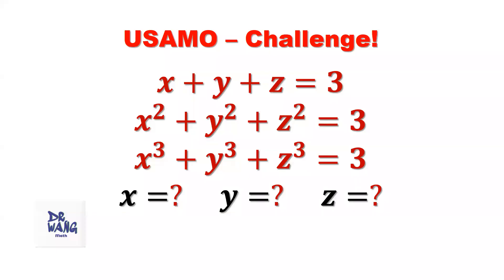Hello, everyone. I am Dr. Wen. Here is the question. If x plus y plus z equals 3, x squared plus y squared plus z squared equals 3, x to the power 3 plus y to the power 3 plus z to the power 3 equals 3, we want to solve this system to find values of x, y, and z. This is a challenging question.